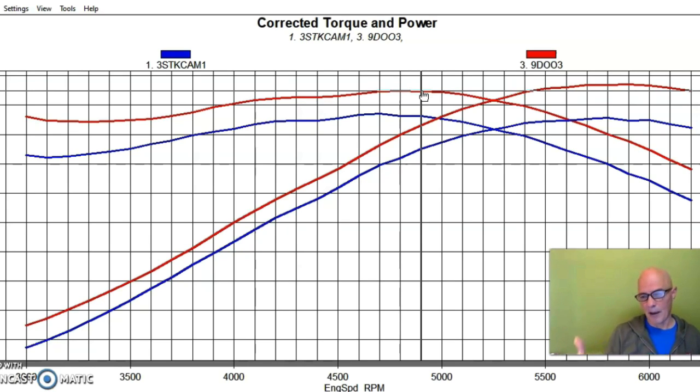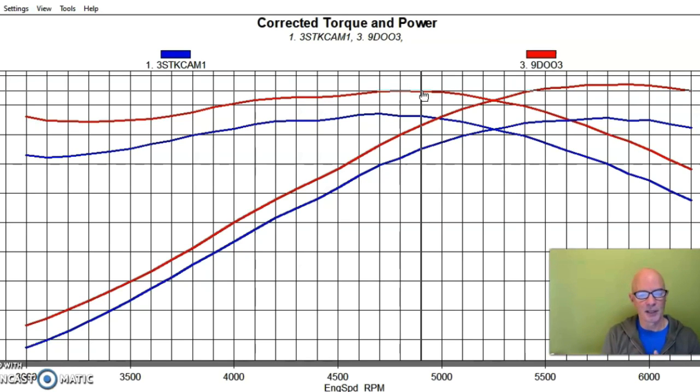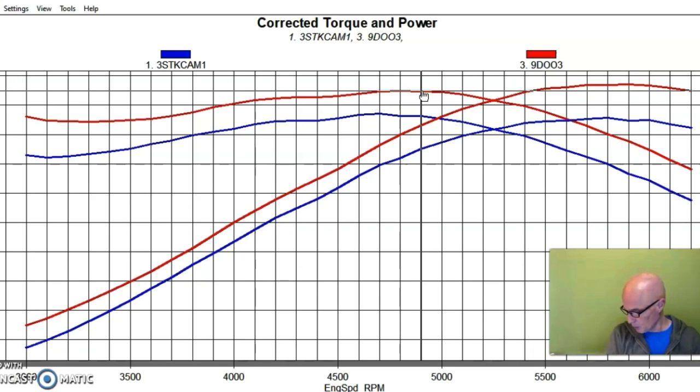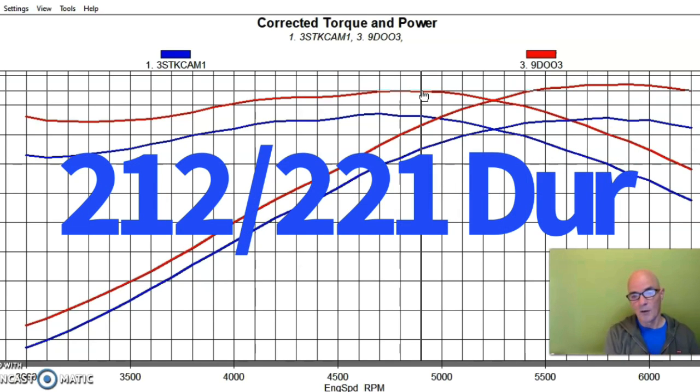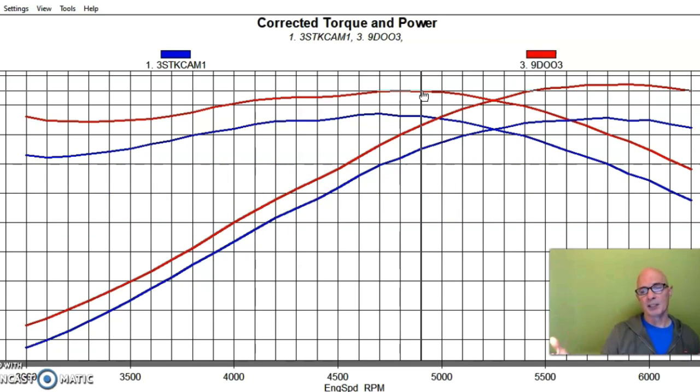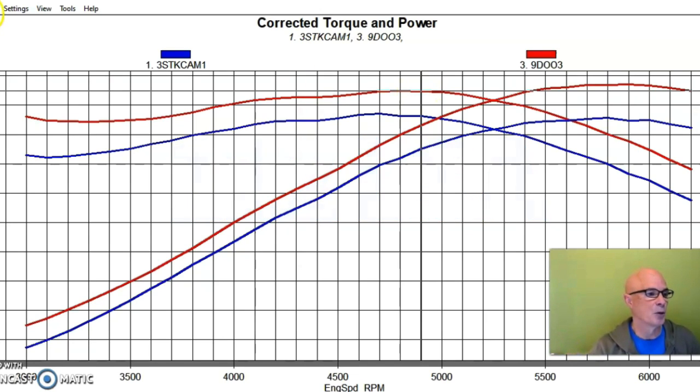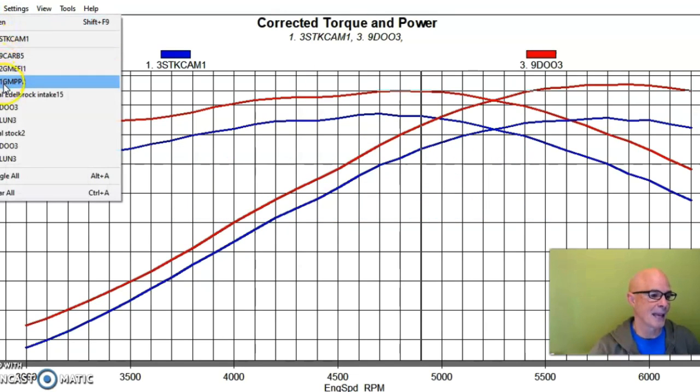But here's the weird thing that happened. After trying that camshaft we wanted to try something we had that was a little bigger, and it was another Lunati cam. This one was 530/549 lift, 212/221 degree exhaust duration, so it had three degrees more exhaust duration than the 218 cam and 112 degree lobe separation angle.